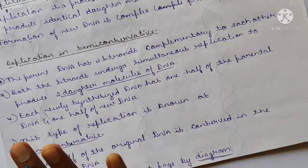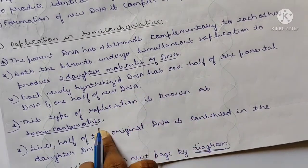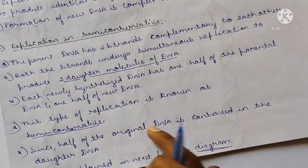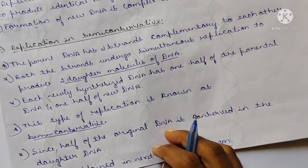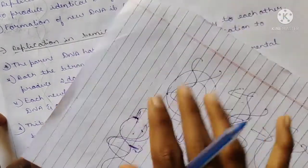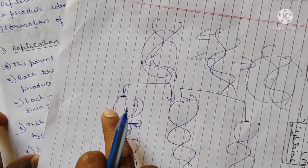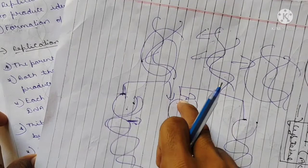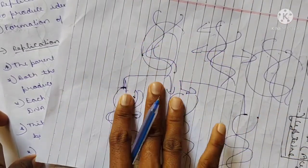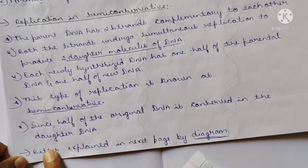This type of replication is known as semi-conservative. It is called semi-conservative because half of the original DNA is conserved in the daughter DNA. In the two strands of DNA, one strand is conserved from the original DNA, so that DNA strand is conserved — hence the name semi-conservative.